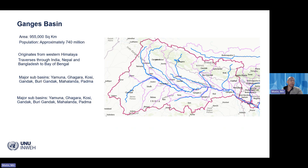Major sub-basins include the Yamuna and Gagara in the upper basin, then the Koshi, Gandak, Burigandak and Ghaghara in the middle Indian part, and the Mahananda and Padma in Bangladesh and India.